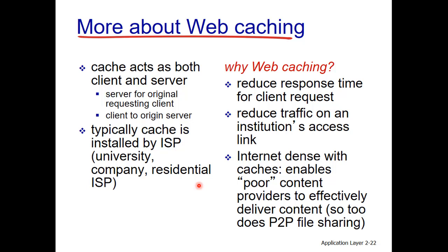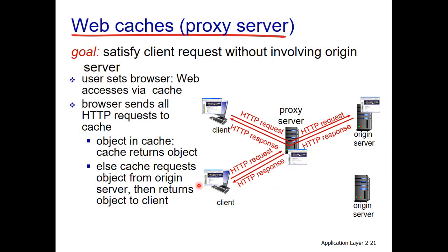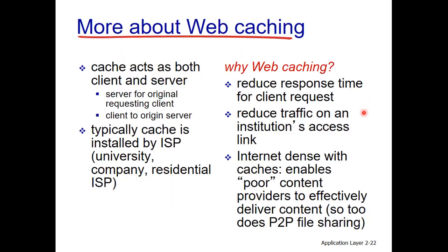The cache acts as both client and server: it acts as a server for the requesting client and as a client for the original server. It listens on port 80, receives requests, checks its cache, and if data is absent, acts as a client to the original server. Typically the cache is installed by ISPs, universities, companies, or residential ISPs.